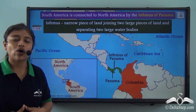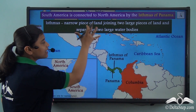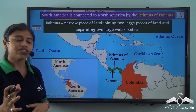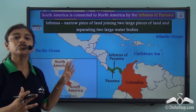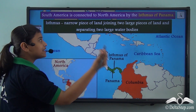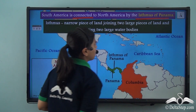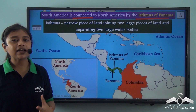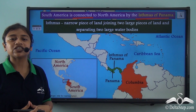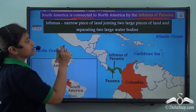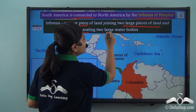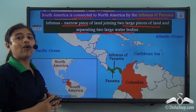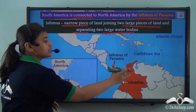The Isthmus of Panama connects the continent of South America and North America. More specifically, the countries of Colombia in South America and Panama in North America are the connecting countries of the two continents. An isthmus is a narrow piece of land joining two large pieces of land and separating two large water bodies. Here, the Isthmus of Panama separates the Atlantic Ocean and the Pacific Ocean while joining the two large land masses of South America and North America.